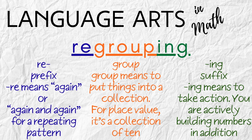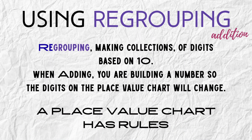In addition, you are actively building a number. So in order to build the number, you have to know the rules of the place value chart and it's based on ten. When you bundle up ten ones, you move that one bundle to the tens group. And when you bundle up ten tens, you move that one bundle to the hundreds place. And that pattern repeats all the way up the place value chart.